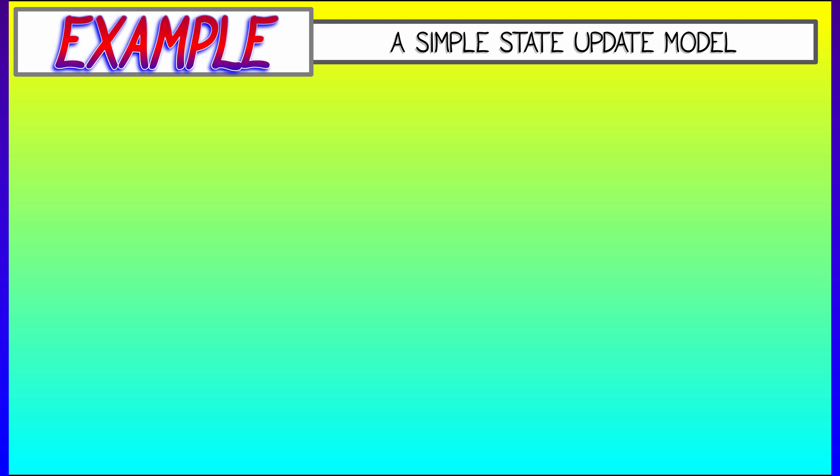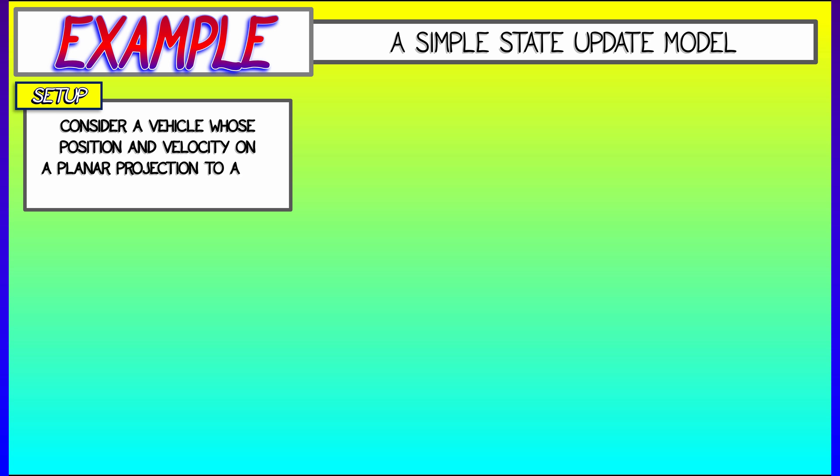Here is a simple example of a state update model. Let's say that we have a vehicle in the plane, and we know its position and its velocity, but with some uncertainty.